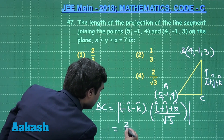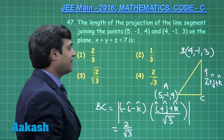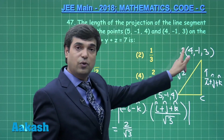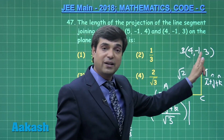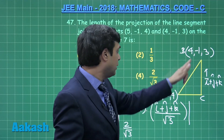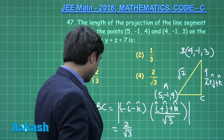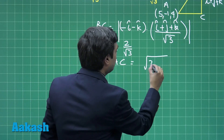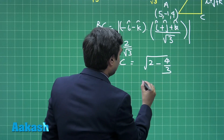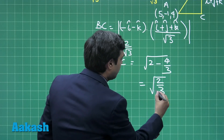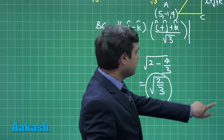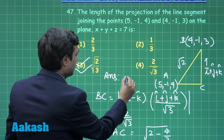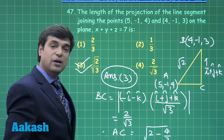BC equals the projection of AB along the normal: modulus of (−i − k) · (i + j + k) divided by √3, which gives 2 by √3. Length AB is √((5−4)² + 0 + (4−3)²) = √2. Therefore AC equals √(2 − 4/3) = √(2/3) units. The correct answer is option 3.